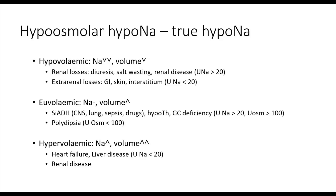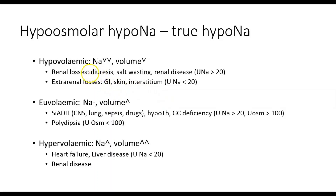Another cause of SIADH is a paraneoplastic syndrome, where malignancies such as small cell lung cancer can produce ectopic SIADH and cause hyponatremia. Hypothyroidism is classically associated with hyponatremia, possibly through TSH feedback leading to increased ADH production, though recent studies have questioned this. Glucocorticoid deficiency causes hyponatremia by various mechanisms including loss of cortisol's normal suppression of ADH. In mineralocorticoid deficiency, there is reduced distal sodium reabsorption mediated by aldosterone, leading to renal sodium losses, which can present as hypovolemic hyponatremia.